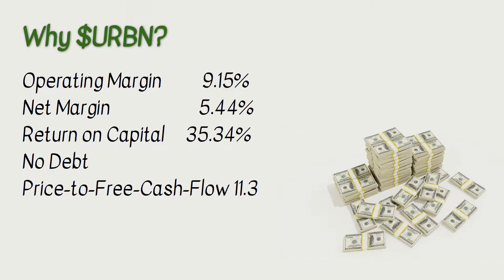Urban has an operating margin of 9.15%, net margin 5.4%, and a stunning return on capital of over 35%. Its price to free cash flow is only 11.3, meaning the whole company is valued at just 11 annual free cash flows — it's a cash generating machine. I like companies like that because there is a large class of investors called value investors who are attracted to stocks like these.